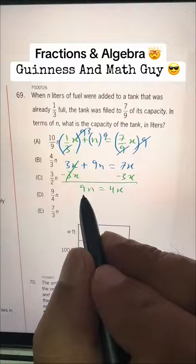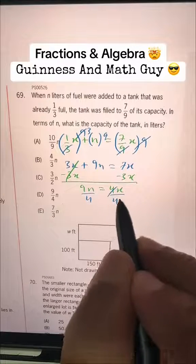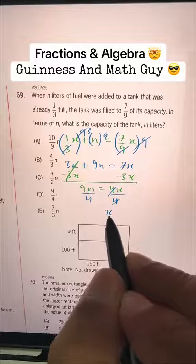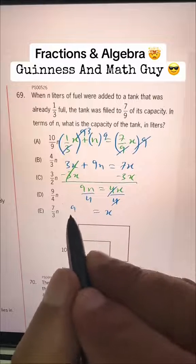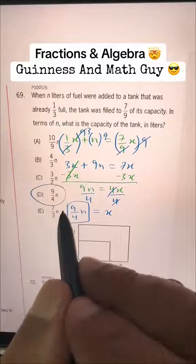Now, divide both sides by 4 to get rid of this 4. So this is cancelled. X is equal to 9 over 4N. That is our answer. Choice D.